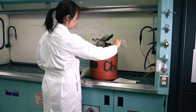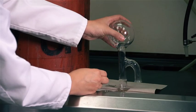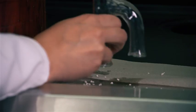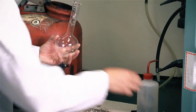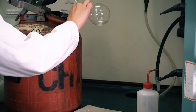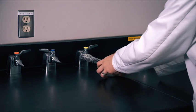Pour the sample into the appropriate waste container. Put the boiling chips into a paper towel and throw into the garbage. Clean the flask using acetone squirt bottle. Use the vacuum to dry the flask. Remember to turn off the condenser water at the end of the experiment.